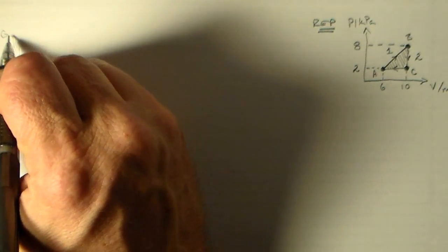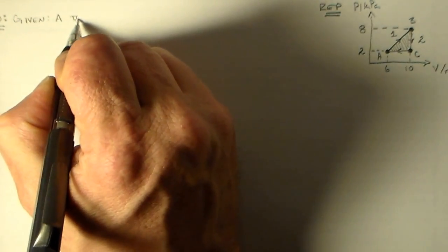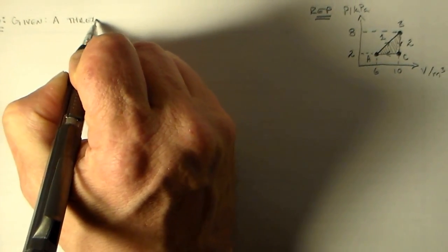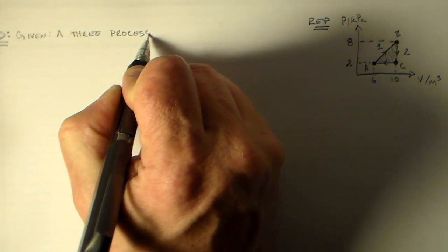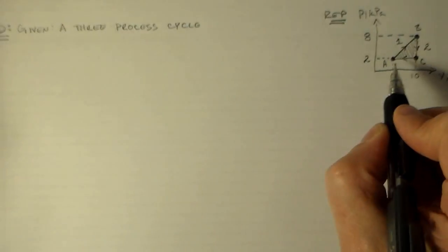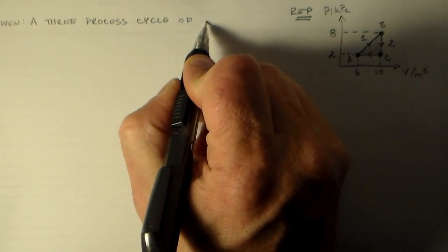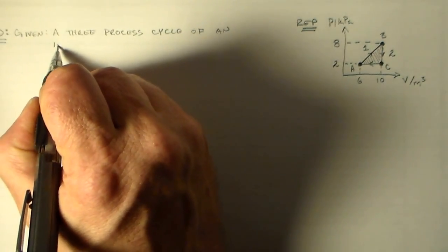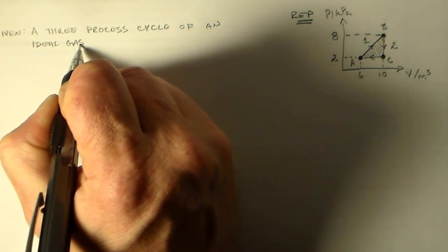So we're given a cycle with three states, or a three process cycle. Three processes. And this is of an ideal gas.